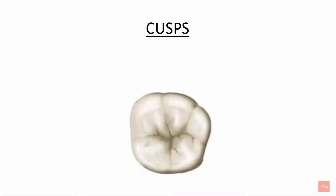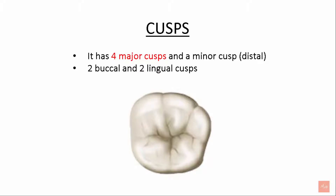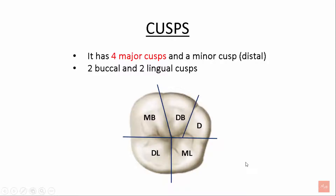Let's see what the cusps are. It has four major cusps and one minor cusp. The four major cusps are two buccal and two lingual cusps: the mesiobuccal cusp, the distobuccal cusp, the distolingual cusp, the mesiolingual cusp, and the distal cusp (the minor cusp).